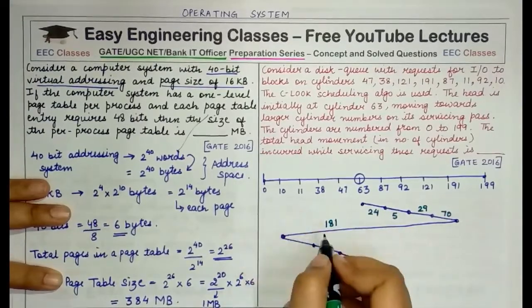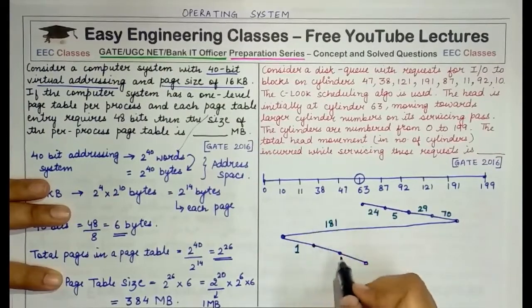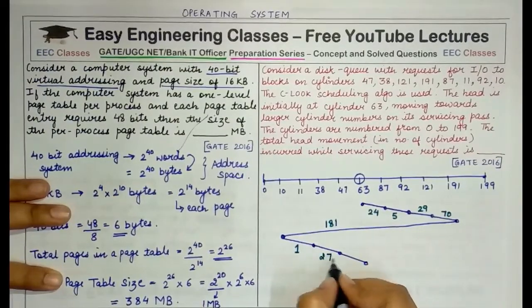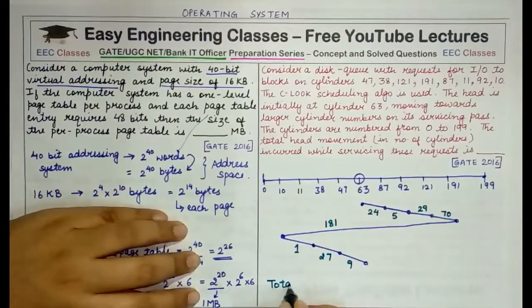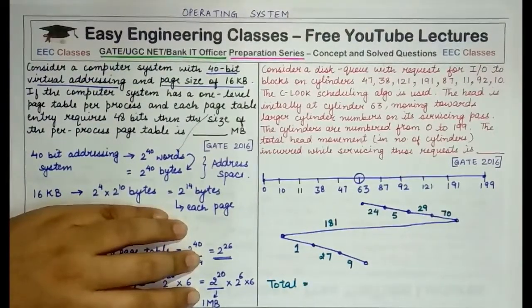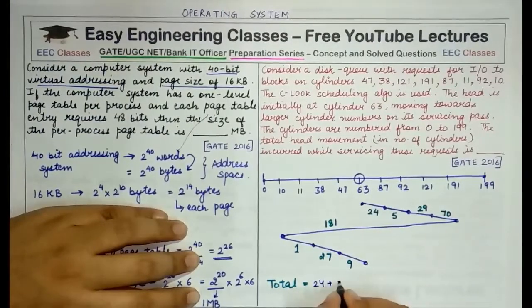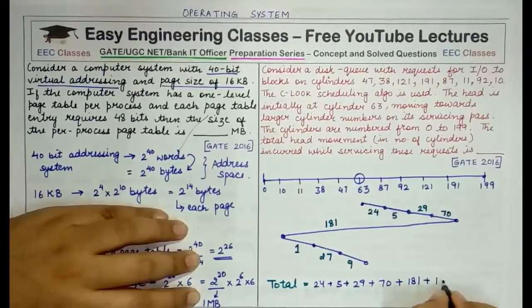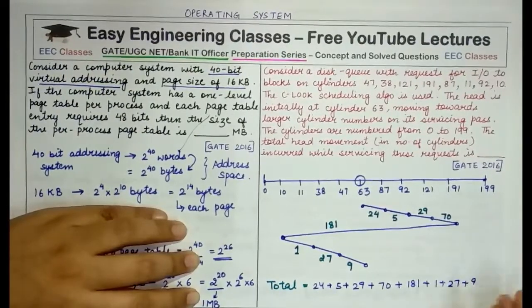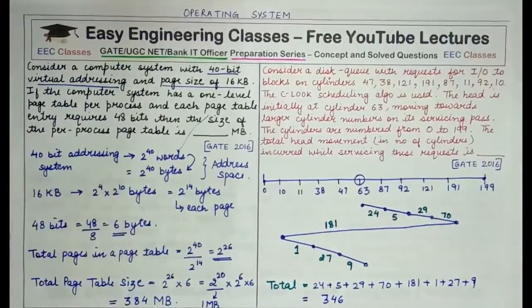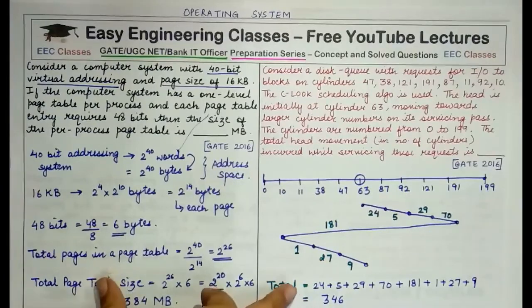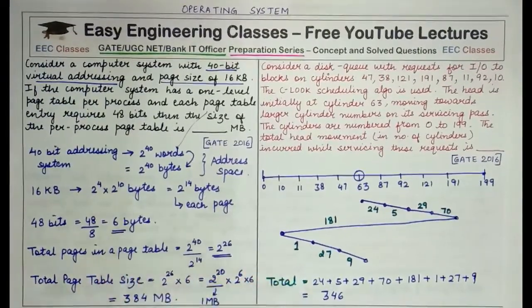Calculating the total head movement: 87−63=24, 92−87=5, 121−92=29, 191−121=70. Then jumping from 191 to 10 is 181. From 10 to 11 is 1, 11 to 38 is 27, 38 to 47 is 9. Total = 24+5+29+70+181+1+27+9 = 346 cylinders. This is a straightforward CLOOK algorithm question — you just need to know the concept.